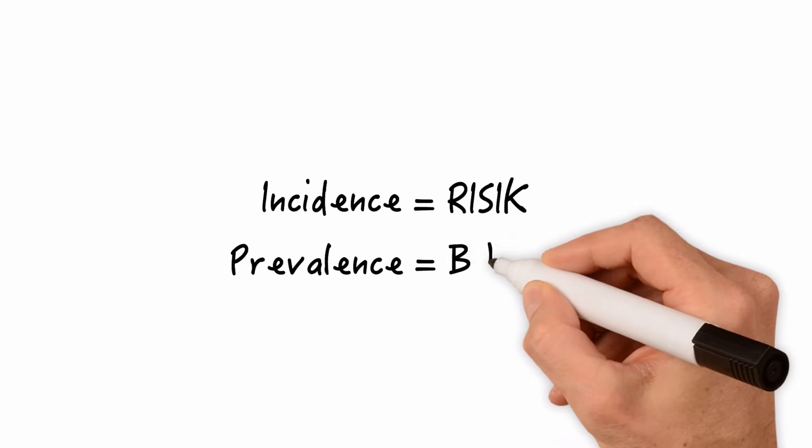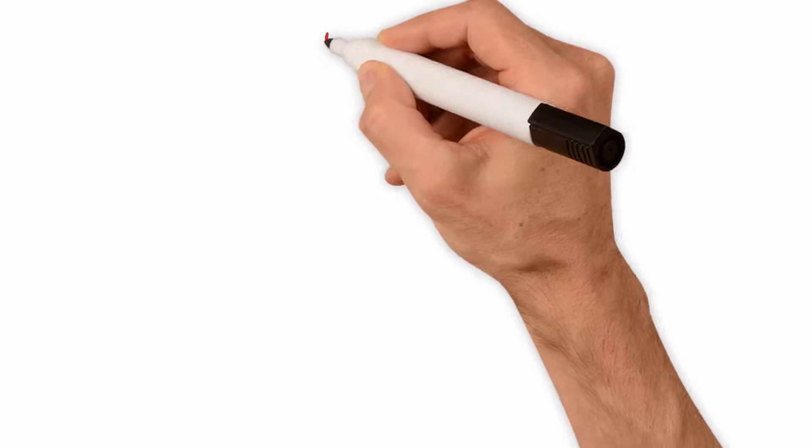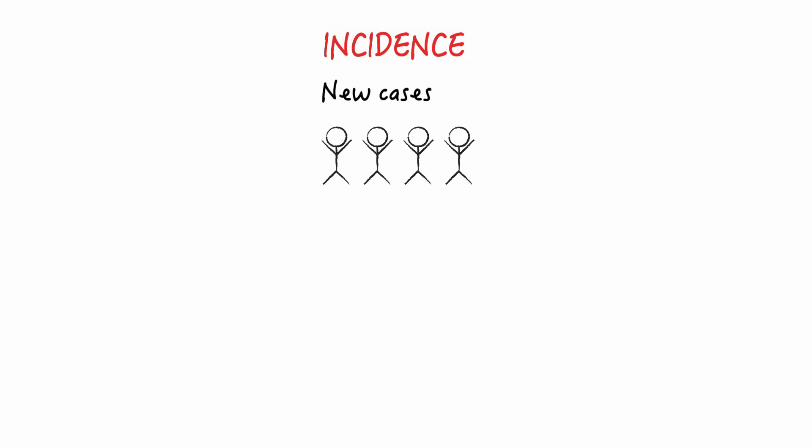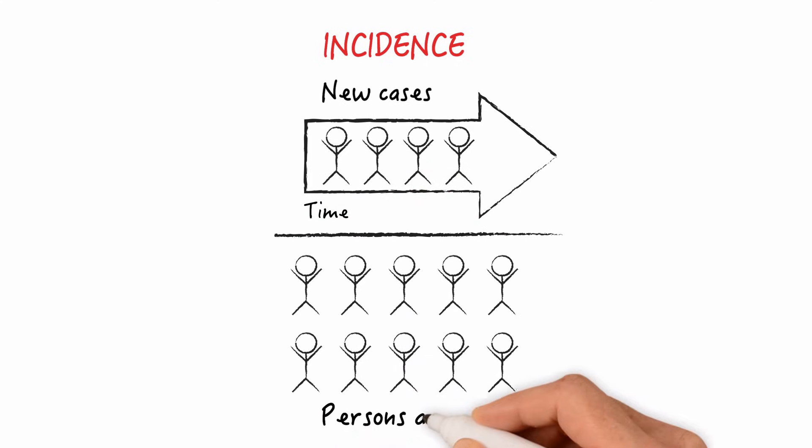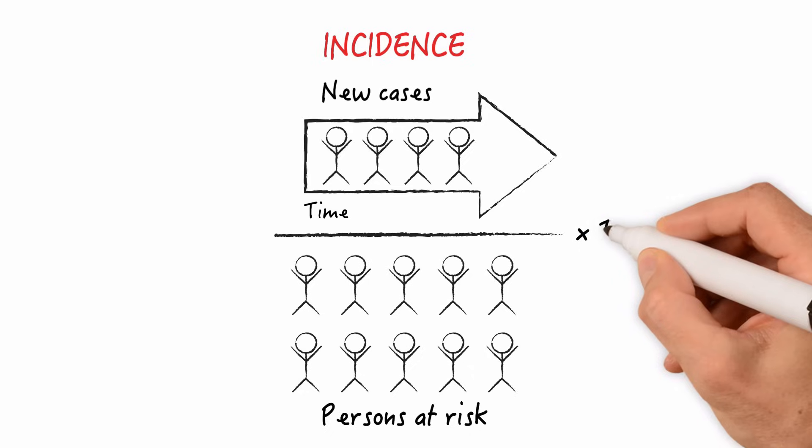Incidence is a measure of disease risk whereas prevalence measures disease burden. Incidence is defined as the number of new cases of a disease during a specific time period divided by the number of persons at risk for the disease during that same time period. The resulting proportion can be multiplied by 1000 to get the number of new cases per 1000 population, or by 100 to get the number per 100 population. That's up to the beholder.